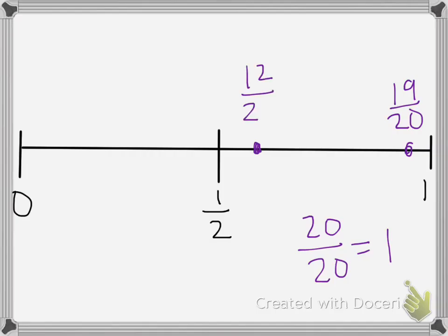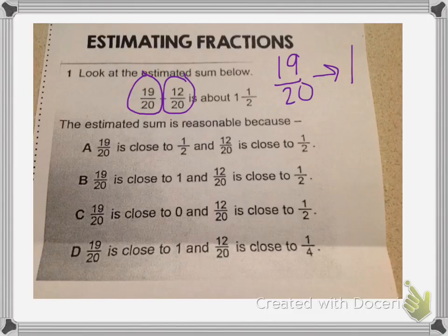I know this because 10 twentieths would be exactly 1 half, and 12 is more than 10 but only 2 more, so it's close to 1 half. So I can say that 12 twentieths rounds to 1 half.